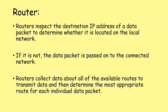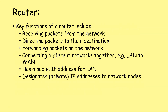Routers inspect the destination IP address of a data packet to determine whether it is located on the local network. If not, the data packet is passed on to the connected network. Routers collect data about all available routes and determine the most appropriate route for each individual data packet. Key functions of a router include receiving packets from the network, directing and forwarding packets to their destination, connecting different networks together such as LANs to WANs, and designating private IP addresses to network nodes while holding a public IP address for local area networks.